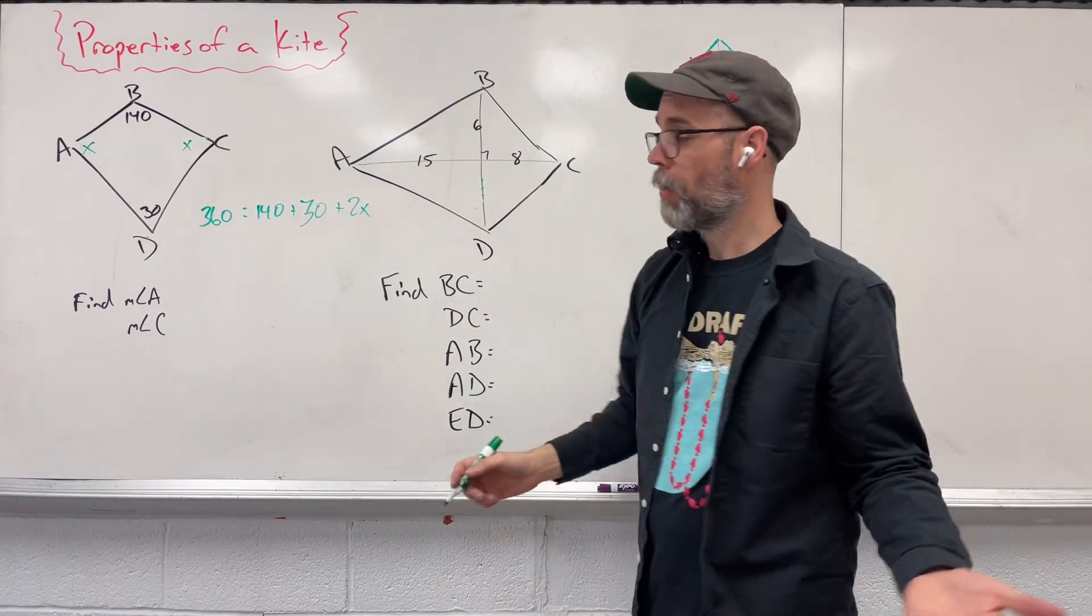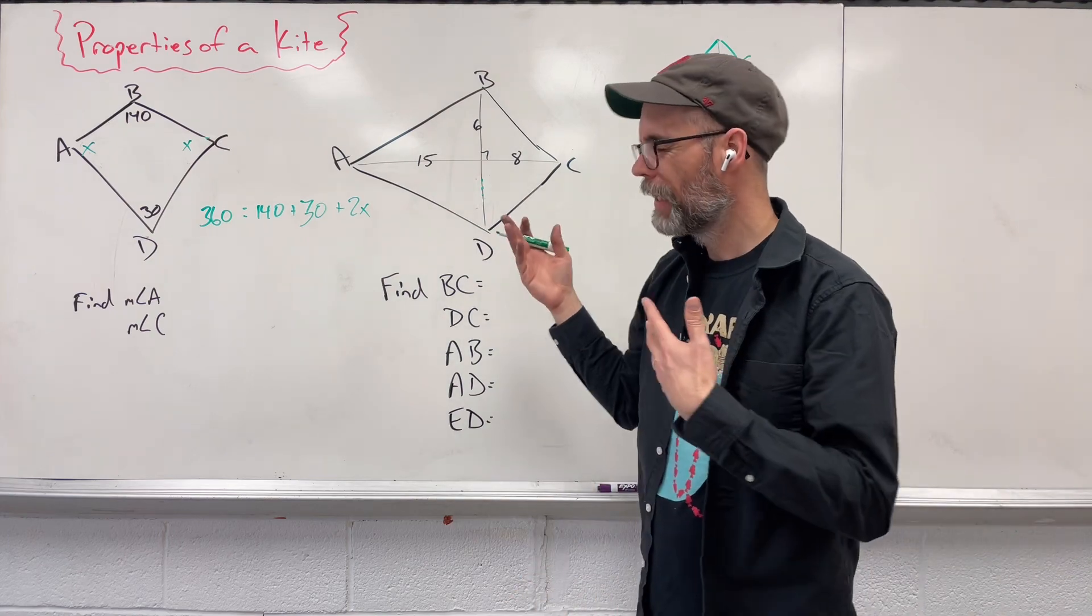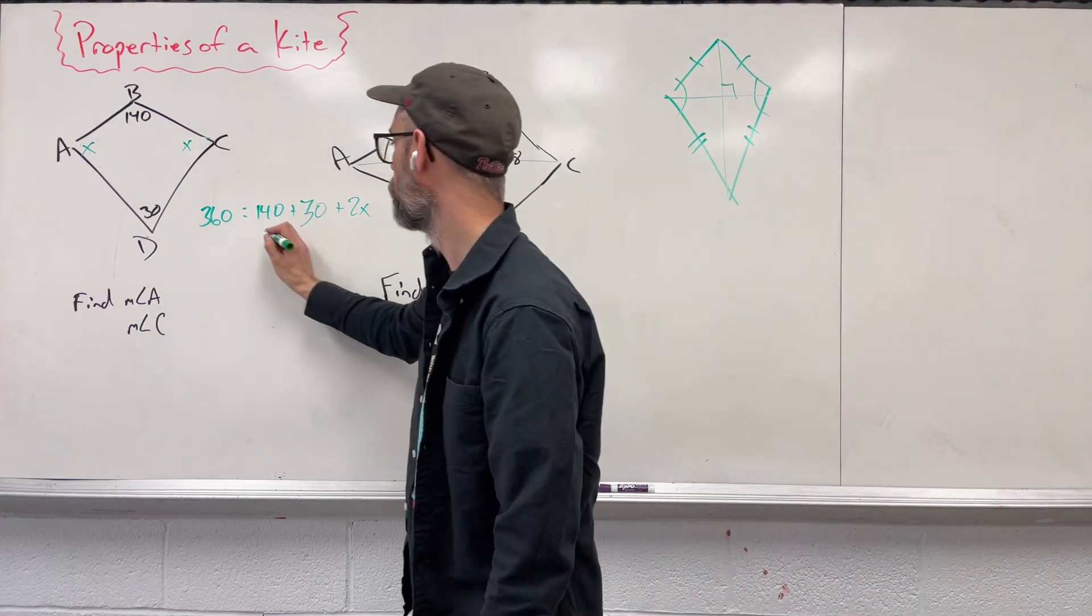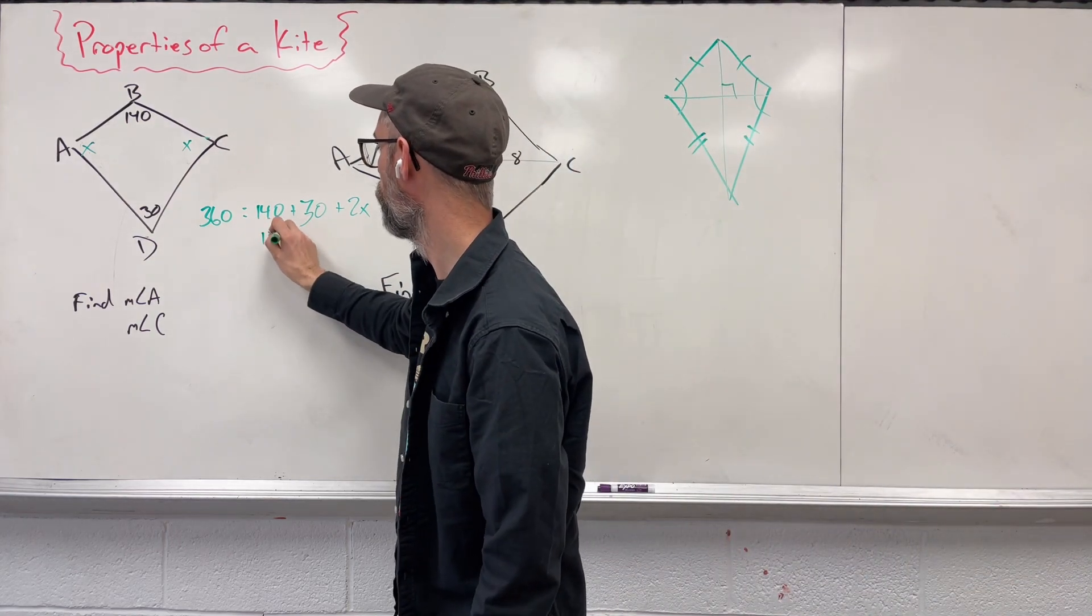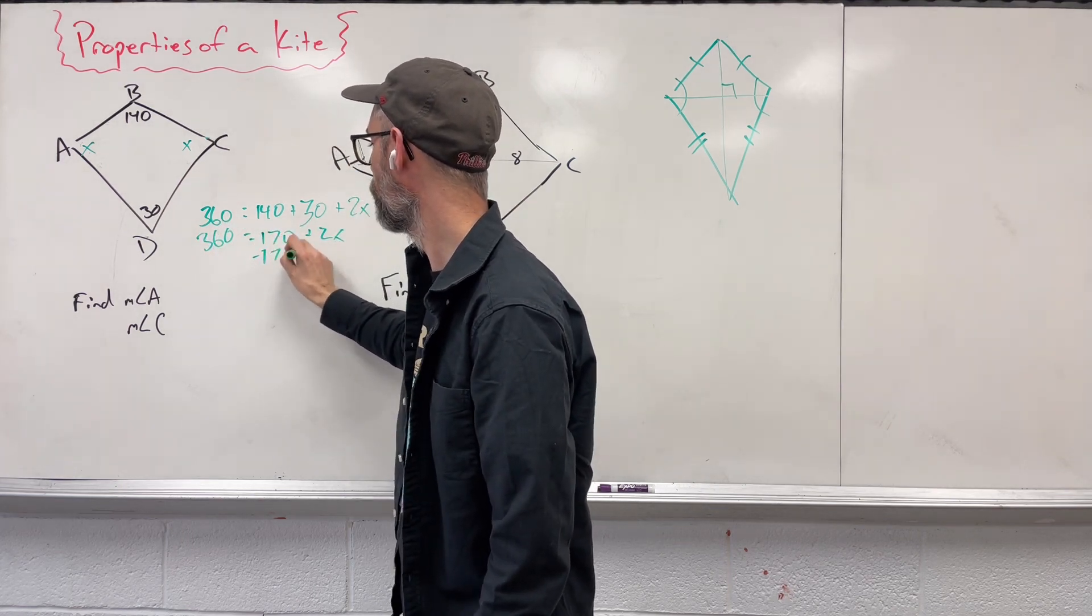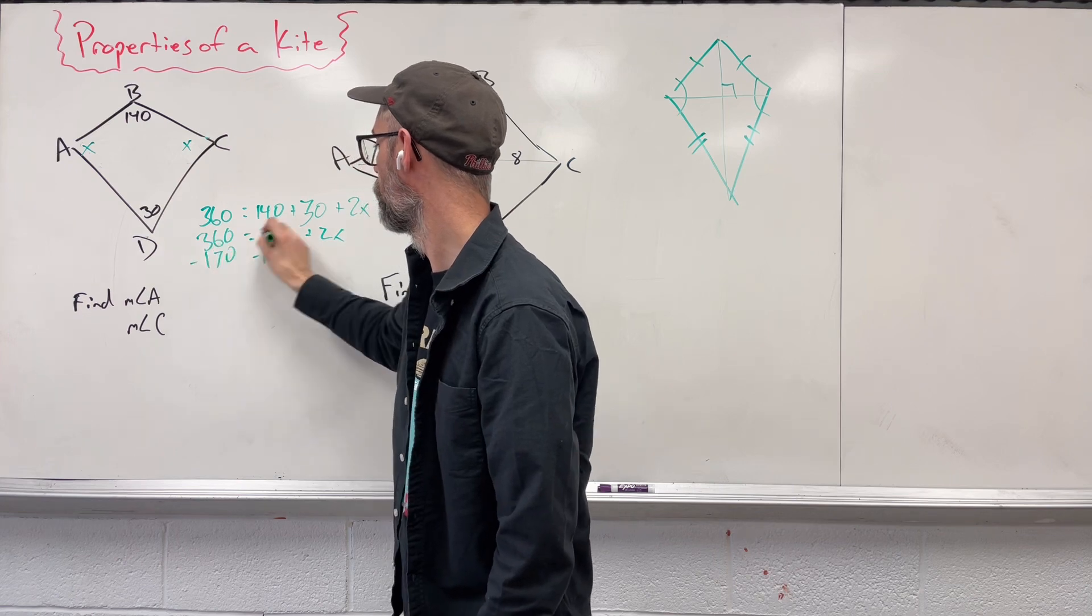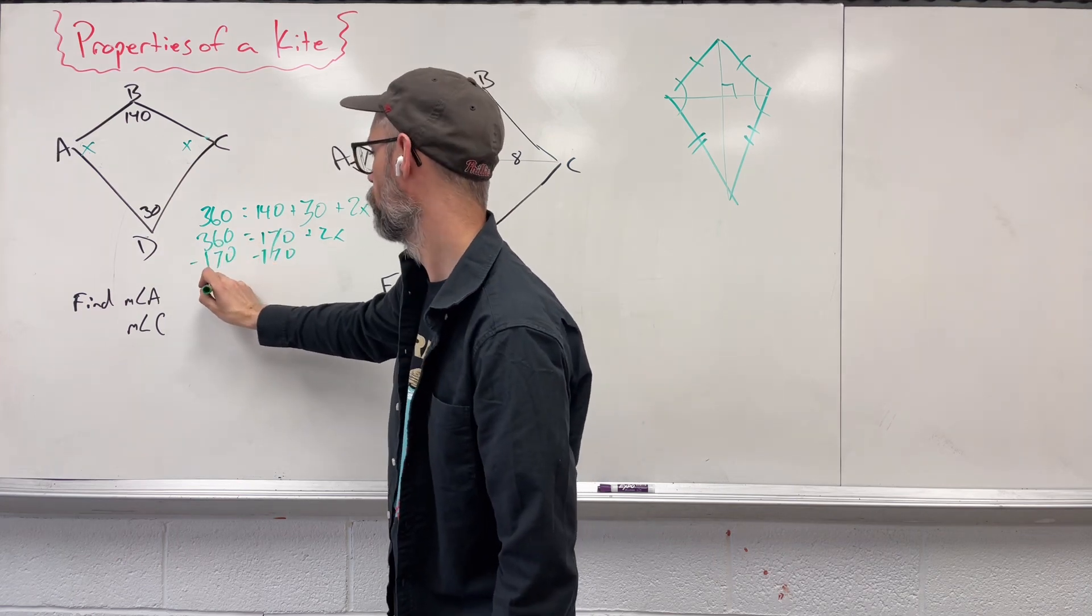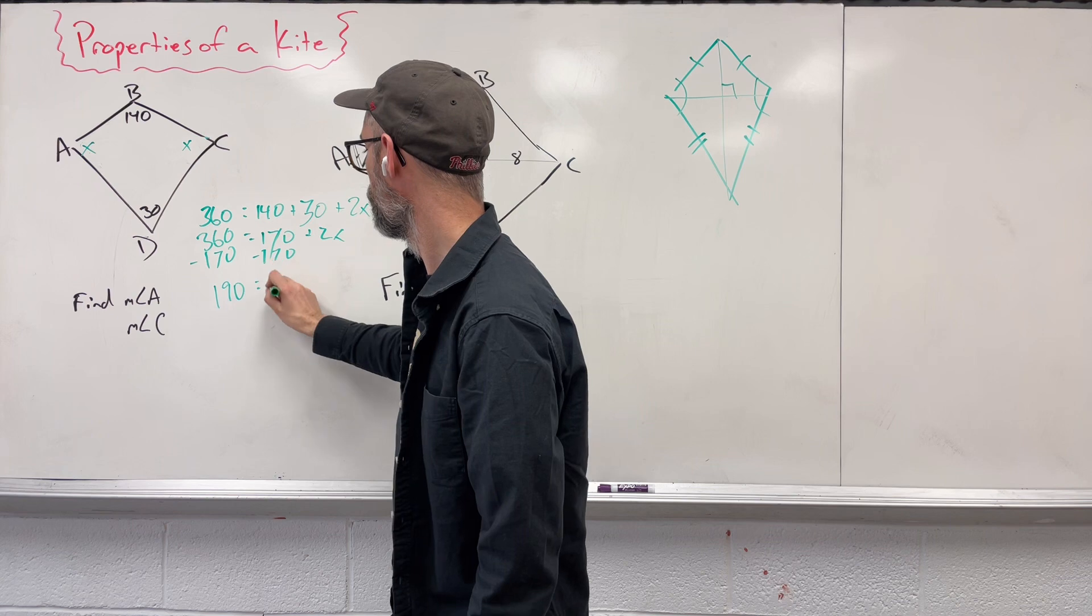And now just use our inverse operations and get X alone. So 140 and 30 is going to give us 170, minus that 170, leaving us with 190 equals 2X.